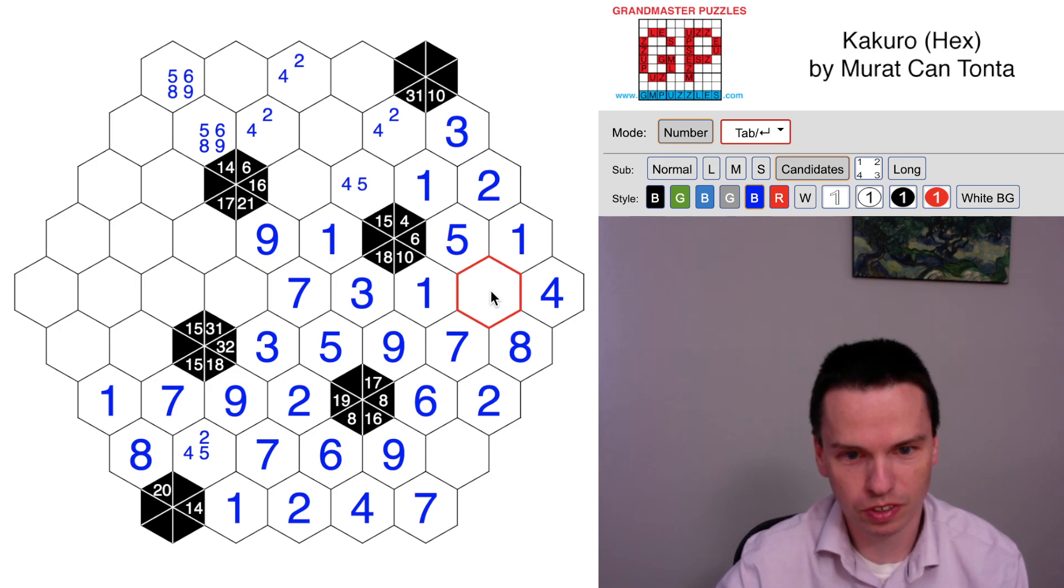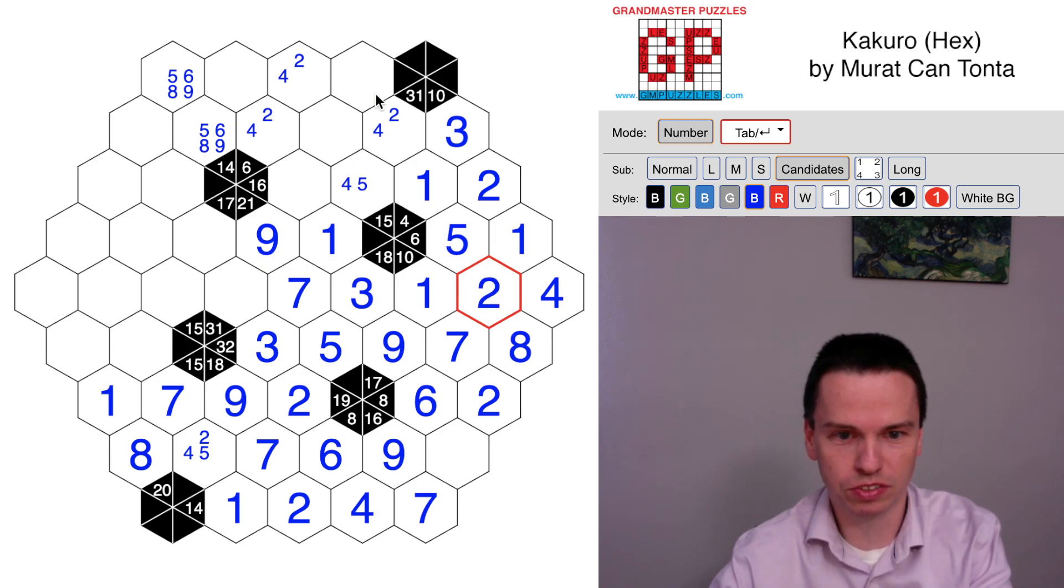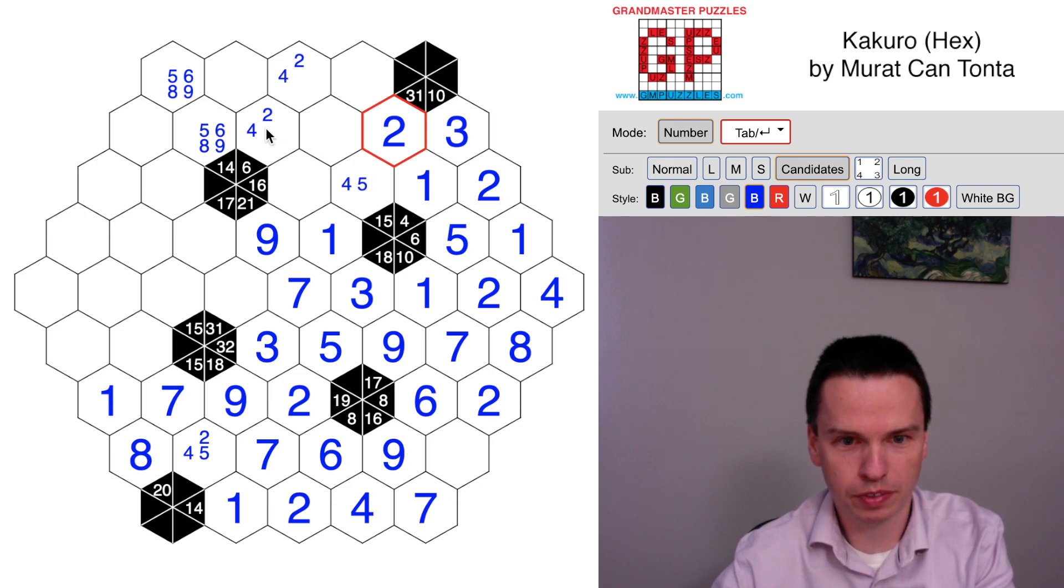This cell sees a lot of digits: 1, 3, 4, 5, 6, 7, 8, 9. So this is left to just being a 2 as a single. That forces this to be a 4 up top. Puts in a 2, 4.